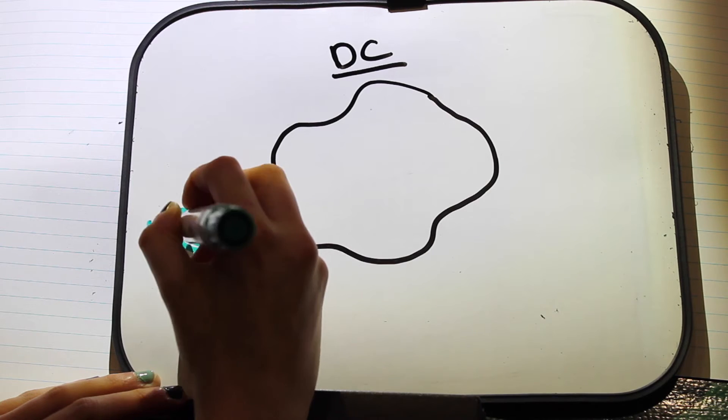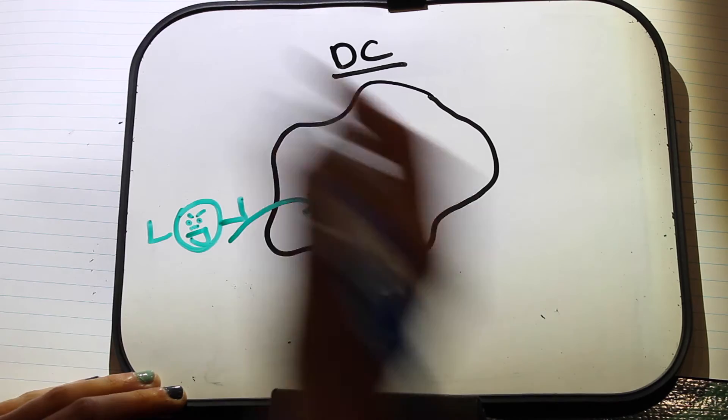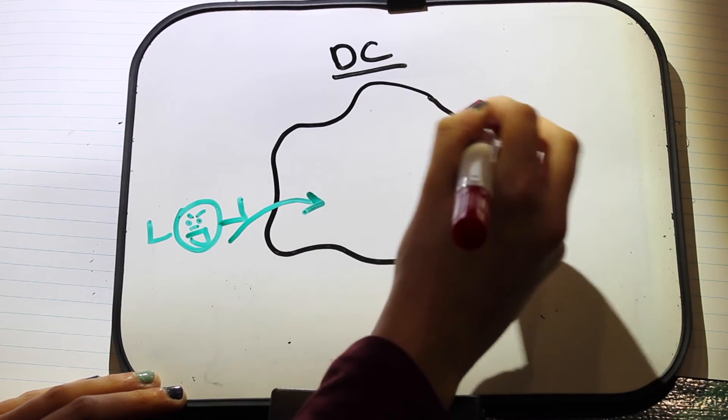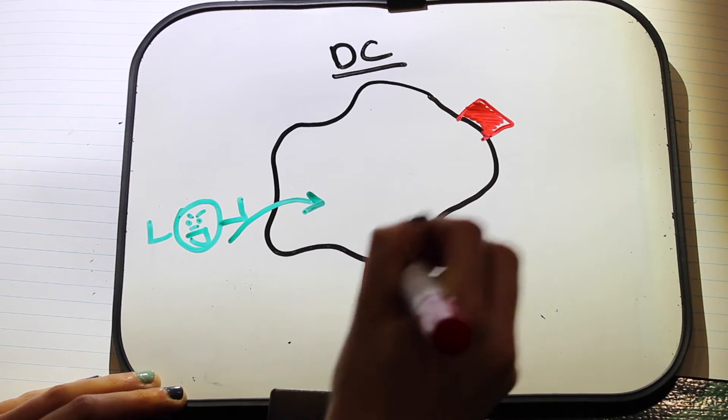They are present at the epithelial barrier and are the strongest activators of naive T-cells. Immature dendritic cells are very efficient at ingesting pathogens. Maturation and migration occur with the dendritic cell ending in the lymph node.